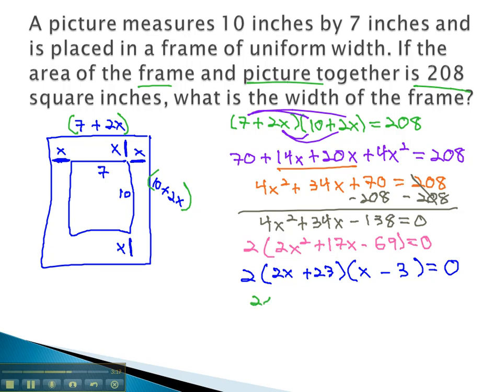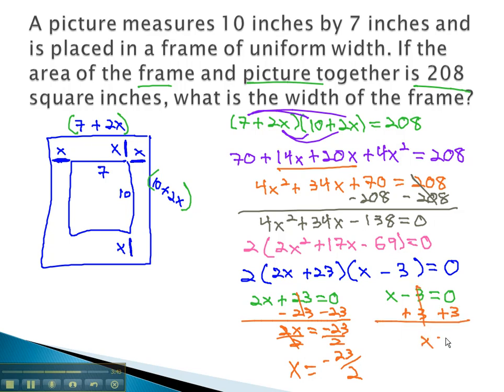Once it's factored, we set each factor equal to 0 that has a variable in it. Now, we can solve by subtracting 23 to get 2x equals negative 23, and dividing by 2 to get x equals negative 23 halves, or solving the other equation by adding 3 to get x equals 3.